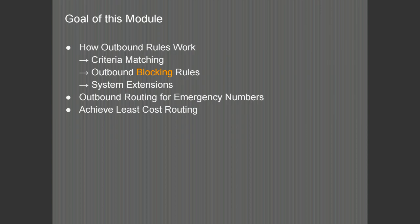In this module, we will focus on the outbound rules of 3CX. We will see what different criteria are used and how they match an outgoing call. We will see how the outbound rules can be used to block calls from going out from certain user extensions, and how the system extensions can be configured in the outbound rules to make outgoing calls.